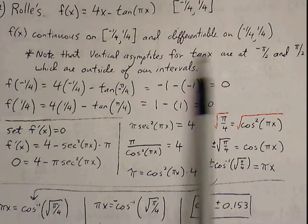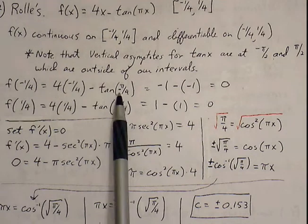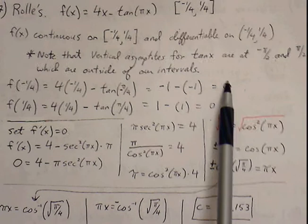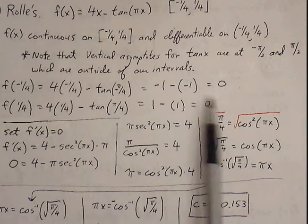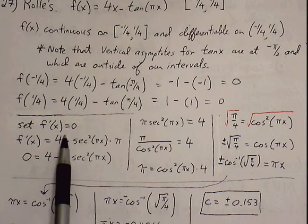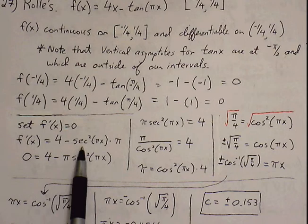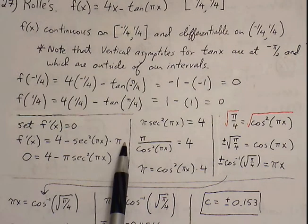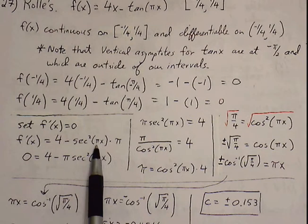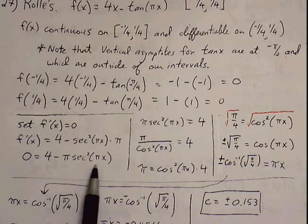The function is continuous and differentiable. Now we look at our endpoints. Plug negative one-fourth into our original function — you get 0. Plug one-fourth into the original function — you also get 0. So we've confirmed our endpoints have the same y value, and we can guarantee a slope of the tangent line of 0. Setting f prime equal to 0: f prime of x equals 4 minus secant squared of pi x times pi. So 4 minus pi secant squared of pi x equals 0.